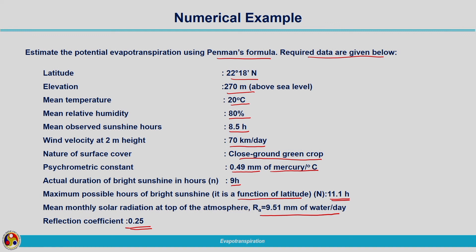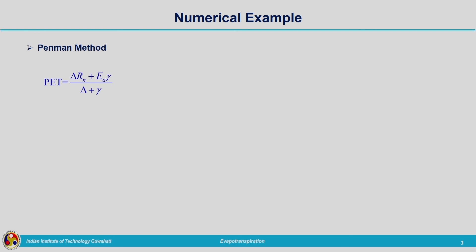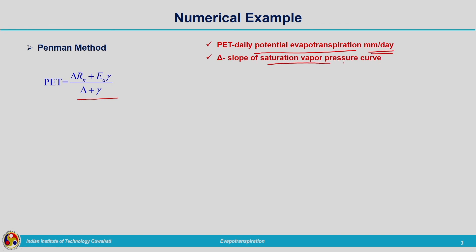From the data given, it is clear that we need to calculate the Rn value directly since net radiation is not given to us. Penman's method gives potential evapotranspiration by the formula: PT = (delta × Rn + ea × gamma) / (delta + gamma). Here PT is the daily potential evapotranspiration in mm/day, and delta is the slope of the saturation vapor pressure curve, calculated by a formula familiar from our discussion of water vapor dynamics.